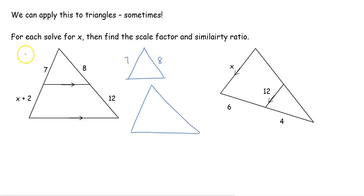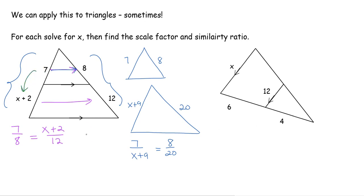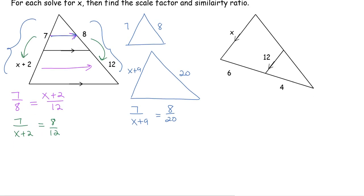So this was 7 and this was 8. This big side over here, x plus 2 plus 7, gives us x plus 9, and 8 plus 12 is 20. We had to set up a proportion of corresponding sides: 7 over x plus 9 equals 8 over 20. With the shortcut, just like above, as long as we follow a pattern — 7 to 8 — we can set up 7 over 8 equals x plus 2 over 12. As long as you are consistent and follow the same pattern, you won't get a wrong answer.